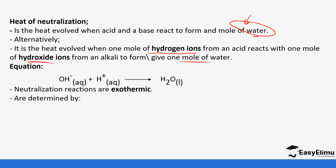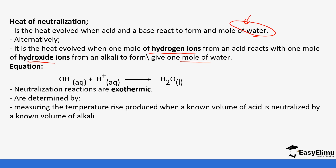The enthalpy of neutralization is determined by measuring the temperature rise produced when a known volume of acid is neutralized by a known volume of alkali. You will always be given a volume of acid and a volume of alkali, and you use that information to determine the temperature change.